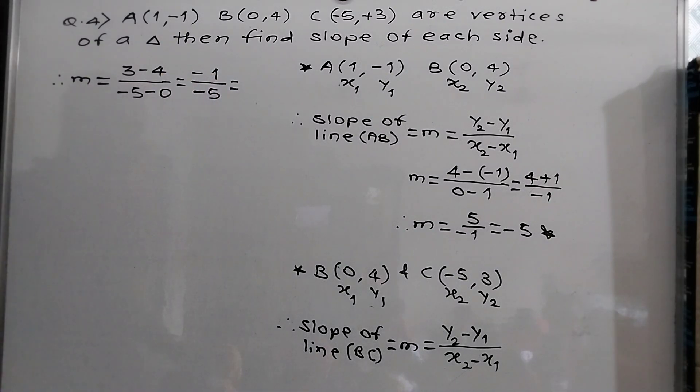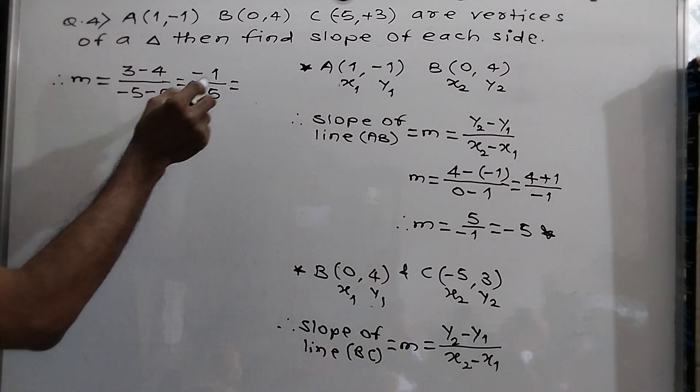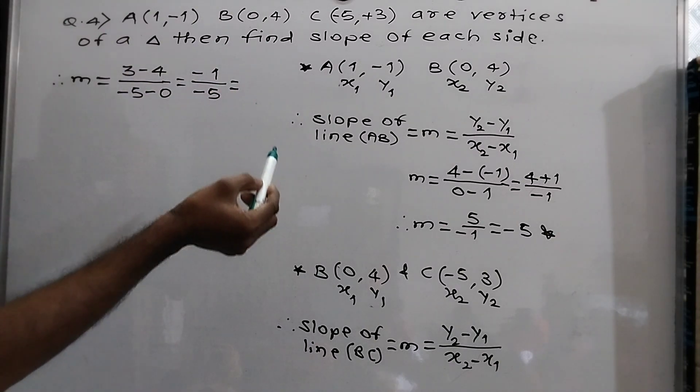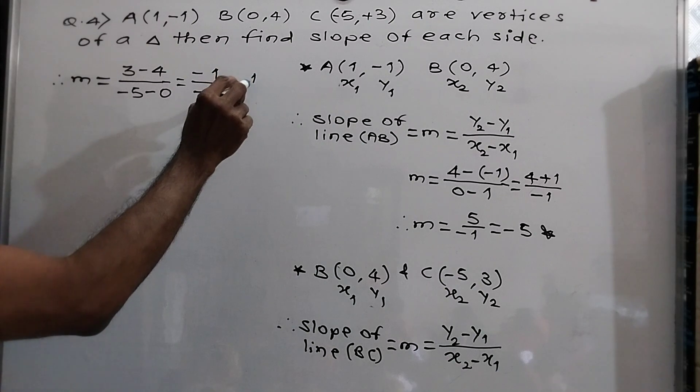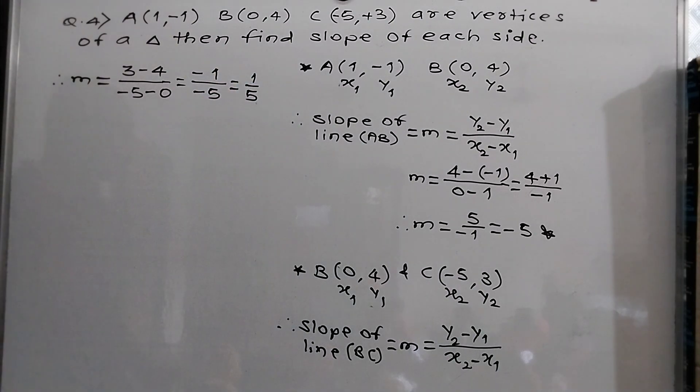Here in division, minus divided by minus always plus. Therefore answer is 1 upon 5.